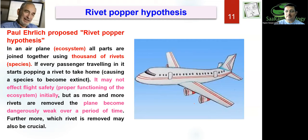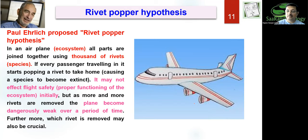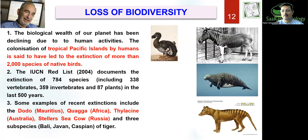Biodiversity ko nuksan pahuncha raha hai — to understand this, scientist Paul Ehrlich gave a great concept using an analogy called the Rivet Popper Hypothesis. He said: take an airplane as the ecosystem, and different parts of the airplane are connected to different species — so species are taken as rivets. If passengers, as they leave, each pop out one rivet, initially you won't notice much, but gradually the plane becomes weak. If the rivets at the wings of the plane are taken off, the plane will become dangerously weak. This shows that biological wealth of the planet has been declining due to human activities — hunting and other forms of greed. In tropical Pacific islands alone, human intervention has caused around 2,000 species of birds to go extinct.